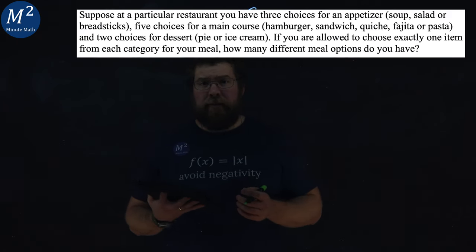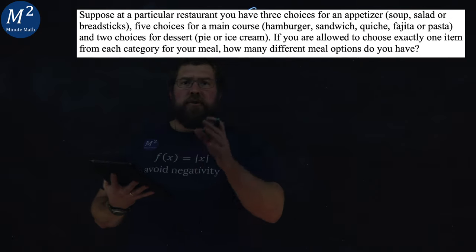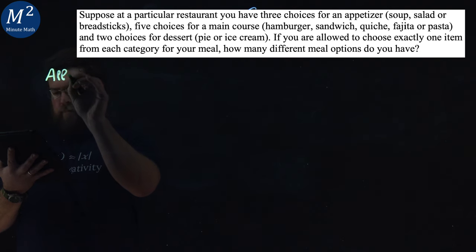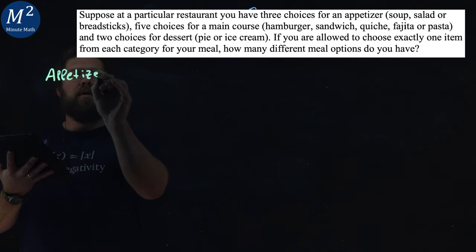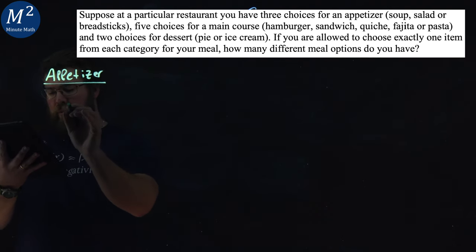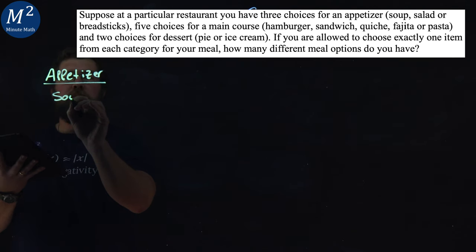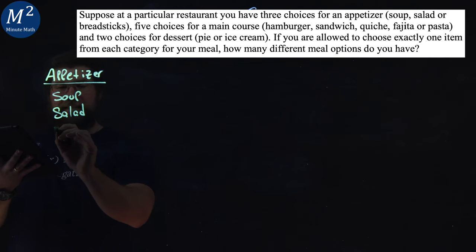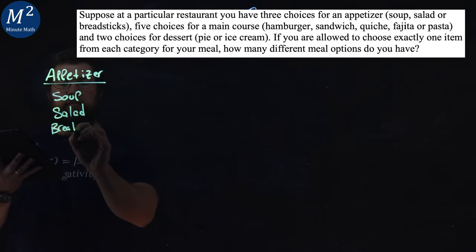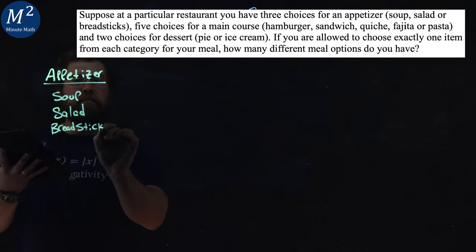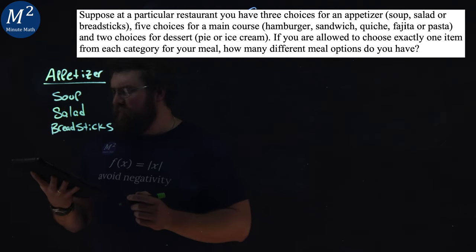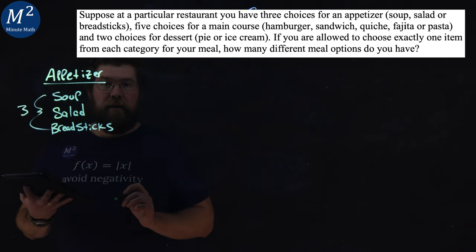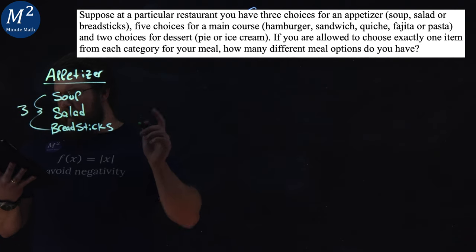Let's learn some basic counting. Let's first set up each category. We have an appetizer option, and there are three of them: soup, salad, or breadsticks. I'd probably go with the soup, but either way, there are three options for the appetizers.